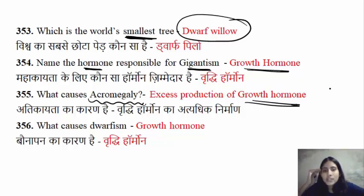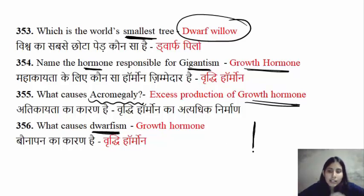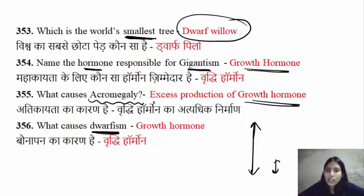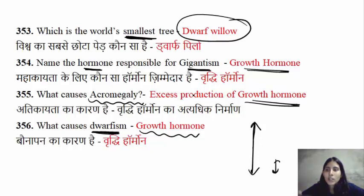Similarly, dwarfism — if the hormone that causes excessive growth is released less, then height and other characters develop less. So it will be your growth hormone. If growth hormone secretion is less, then dwarfism occurs, and if it is more, then acromegaly or gigantism are the two problems.